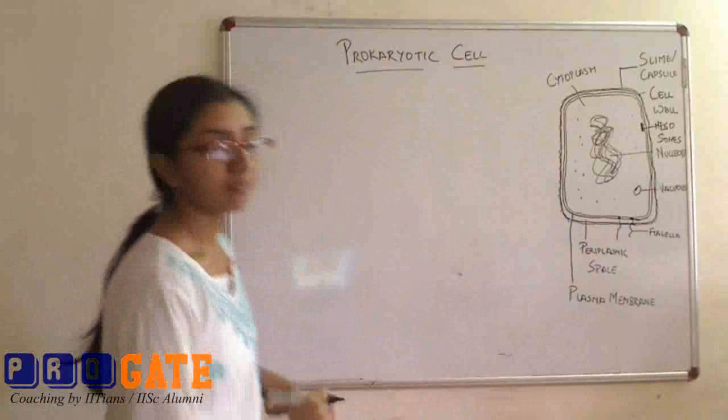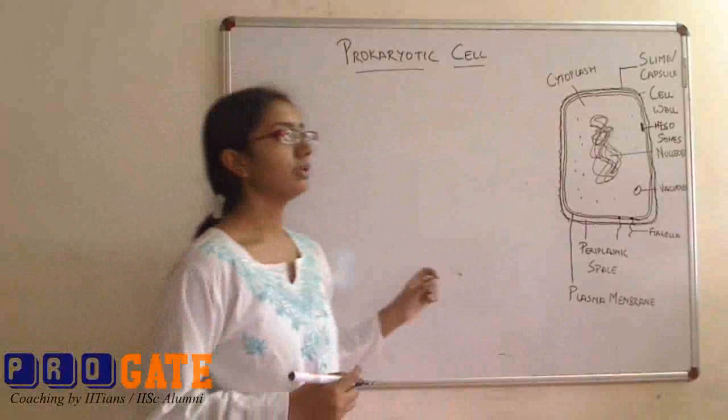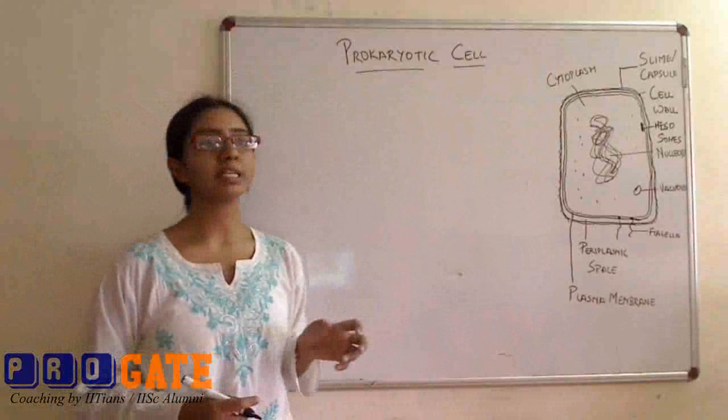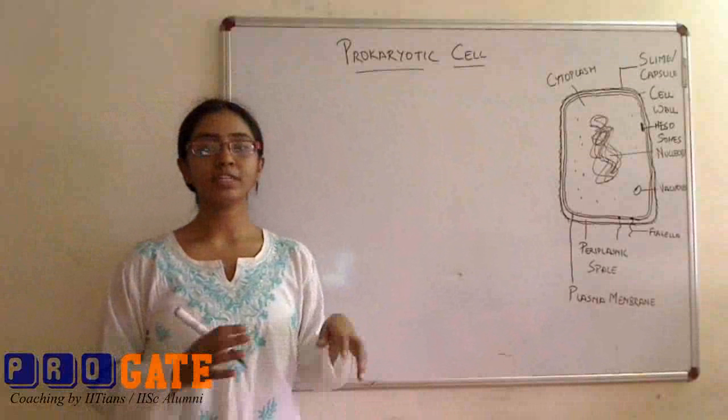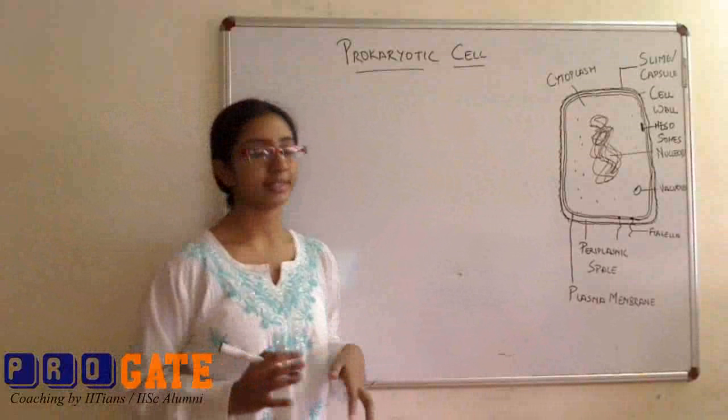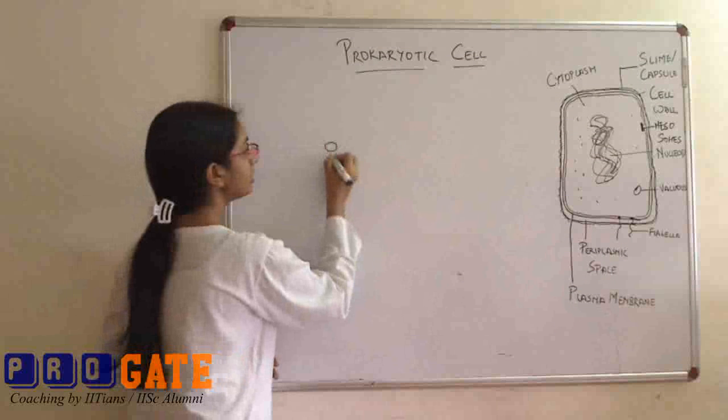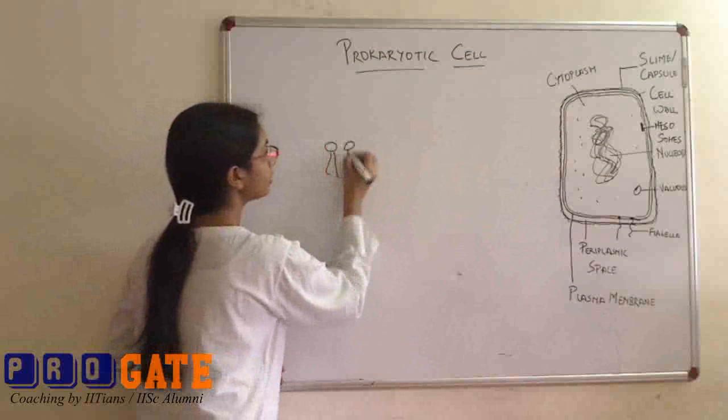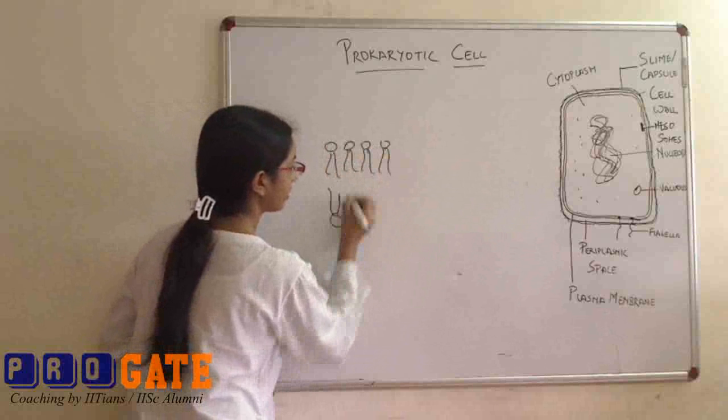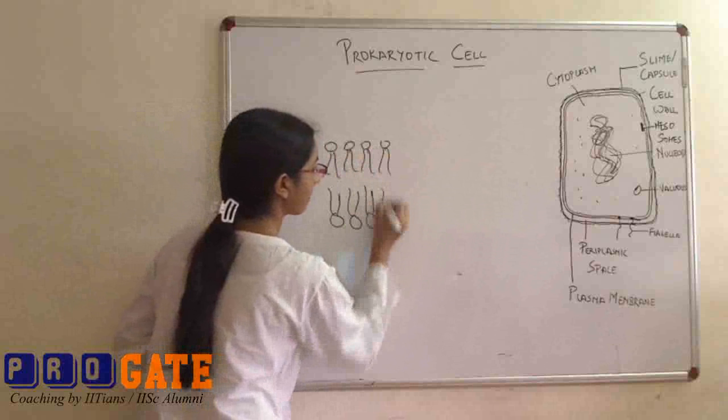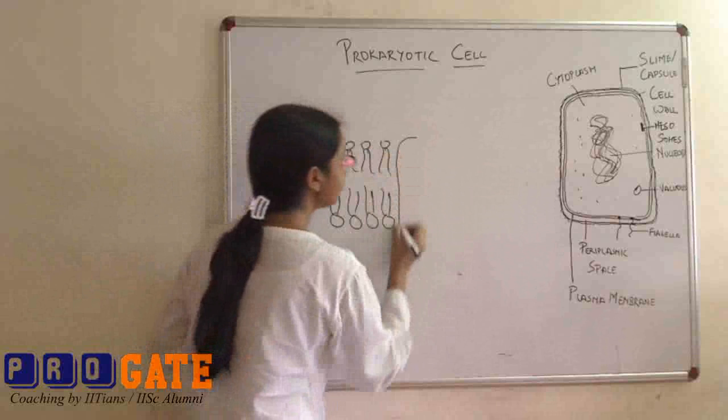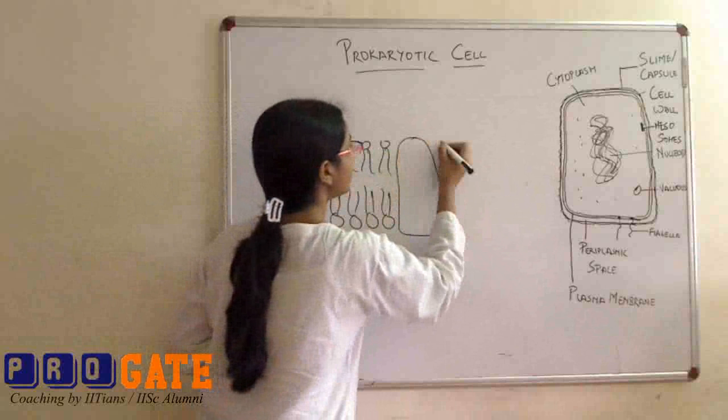Plasma membrane, as you all know, is the basic bilayer structure. It's a lipoprotein structure and the composition of plasma membrane not only differs between eukaryotic and prokaryotic cells but also within different prokaryotic cells. These are the basic structures of the plasma membrane. It's a bilayer. These are the lipids that we have and we have certain kinds of proteins associated with this plasma membrane.